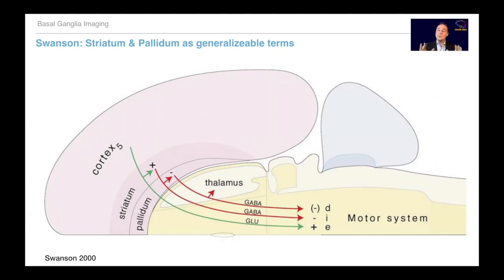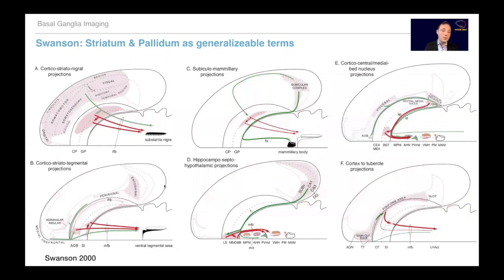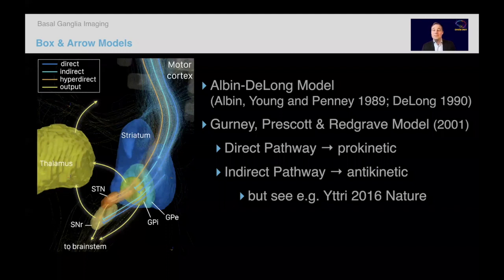If you follow the nomenclature and concepts of Larry Swanson, you could even parcellate the whole brain into cortex, striatum, and pallidum regions, always with excitation, inhibition, and disinhibition functions. Swanson uses these terms more generalized — he parcellates all other cerebral nuclei into either striatum or pallidum as well. The dorsal and ventral striatum loops that we know of use different structures to serve the same function, so potentially this general circuit idea could be translated across the whole brain.